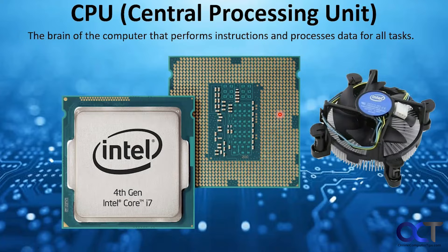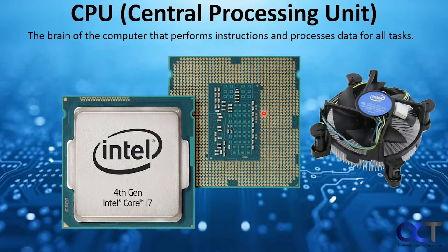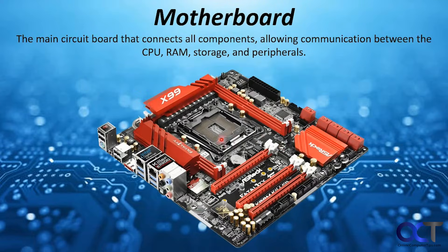Now we'll talk about the CPU — central processing unit, or processor as it's also known. This is the brain of the computer that performs instructions and processes data for all tasks. In this example we have an Intel i7 — here's the top, here's the bottom. These are actually pins sticking out; you can't really tell from the picture, but they will get placed into the slot and clamped down to secure it to the motherboard.